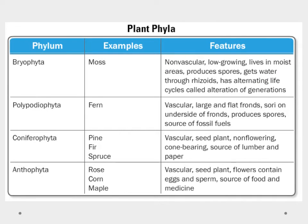When we talk about the Kingdom Plantae we have four phyla that we're going to discuss. The first is the Bryophyta or the mosses. We also have the Polypodiophyta or the ferns. We have the Coniferophyta, sometimes called the gymnosperms, and these are going to be our pines, our fir and our spruce trees. And then we have the Anthophyta or the angiosperms, and these are going to be our flowering plants.